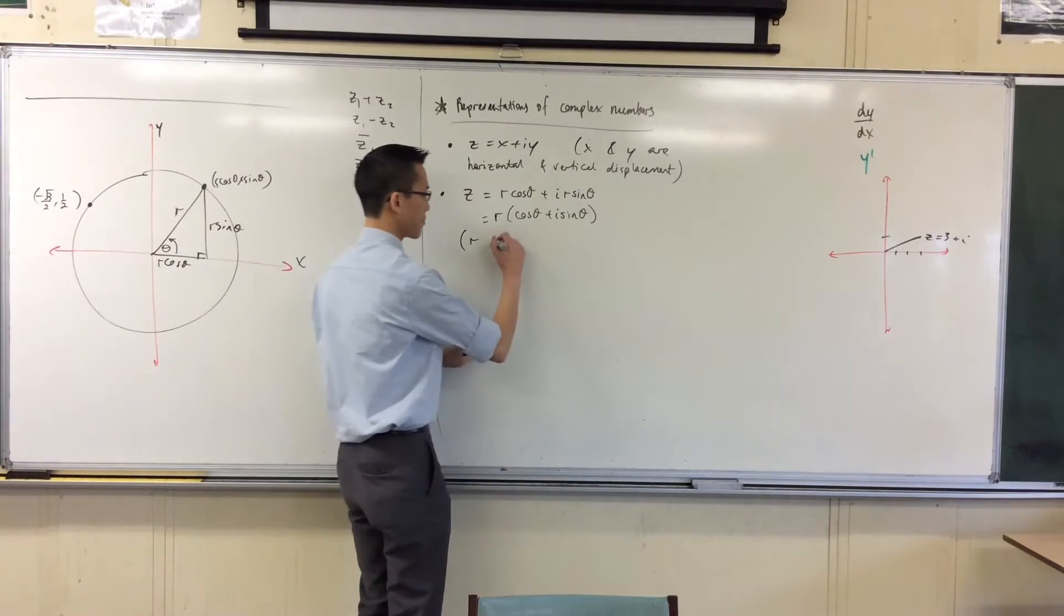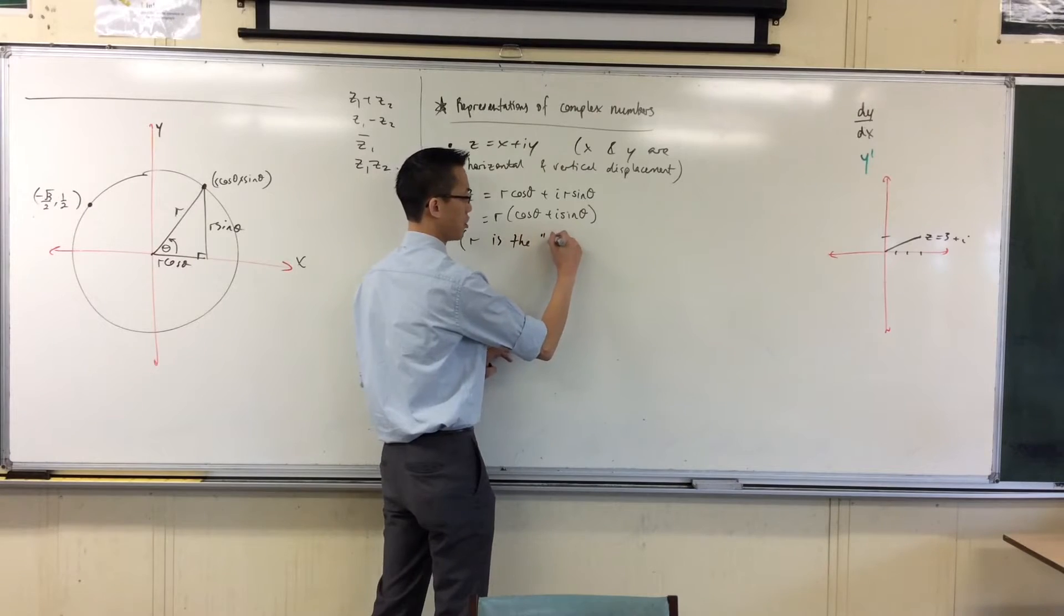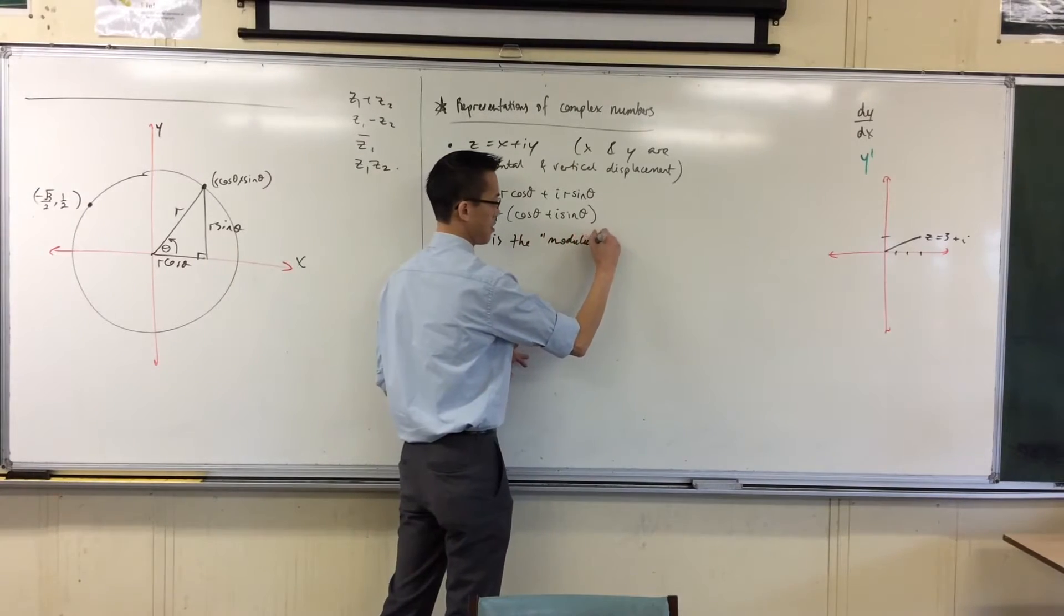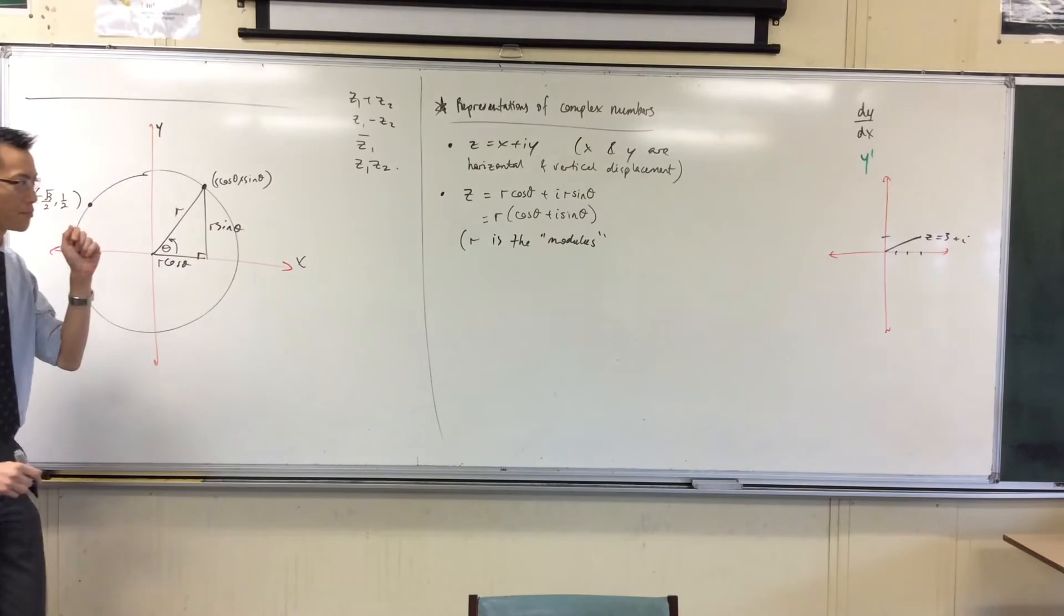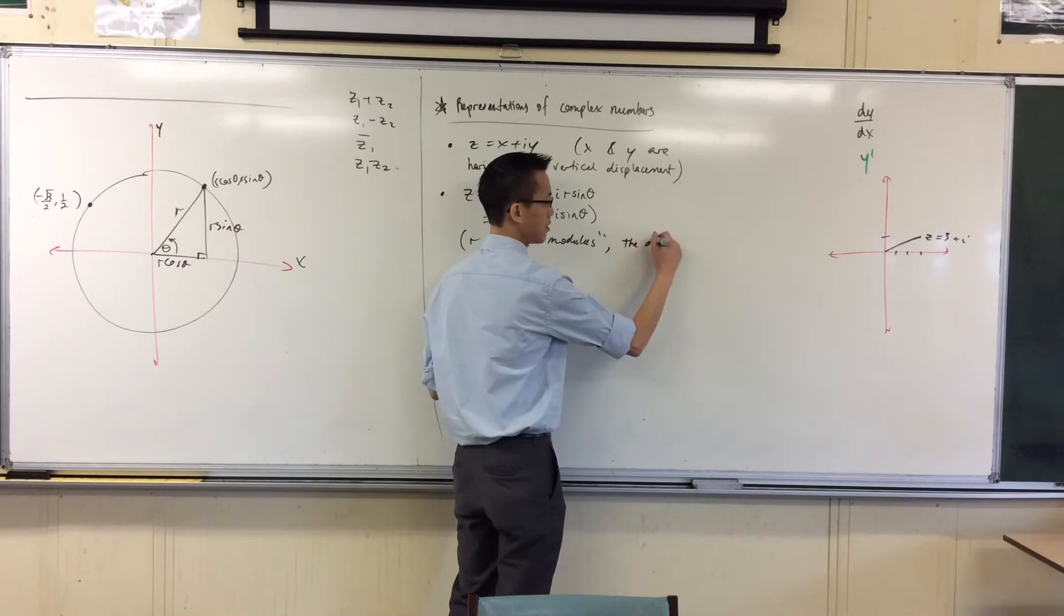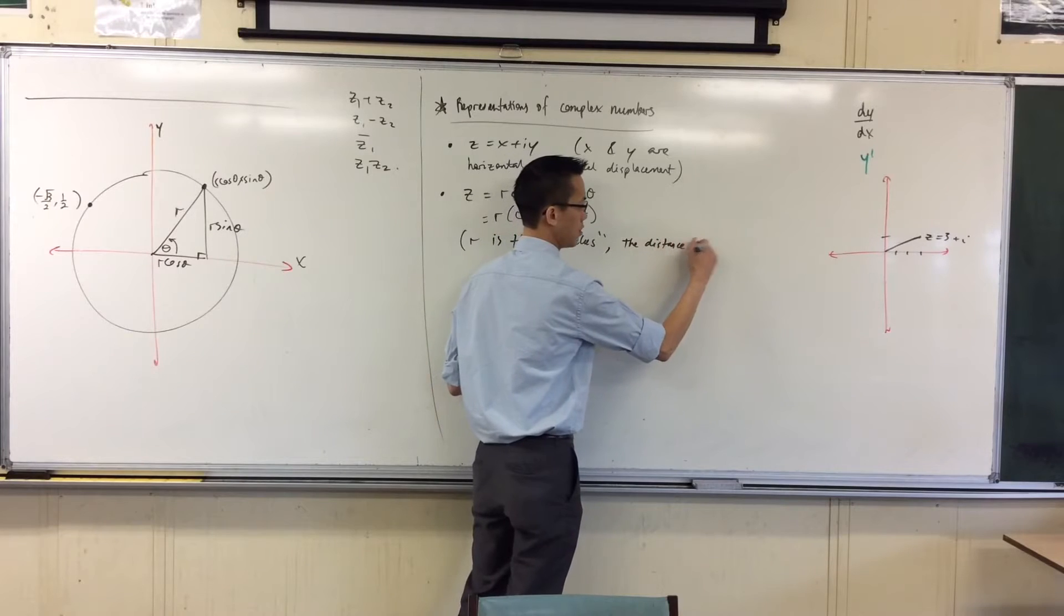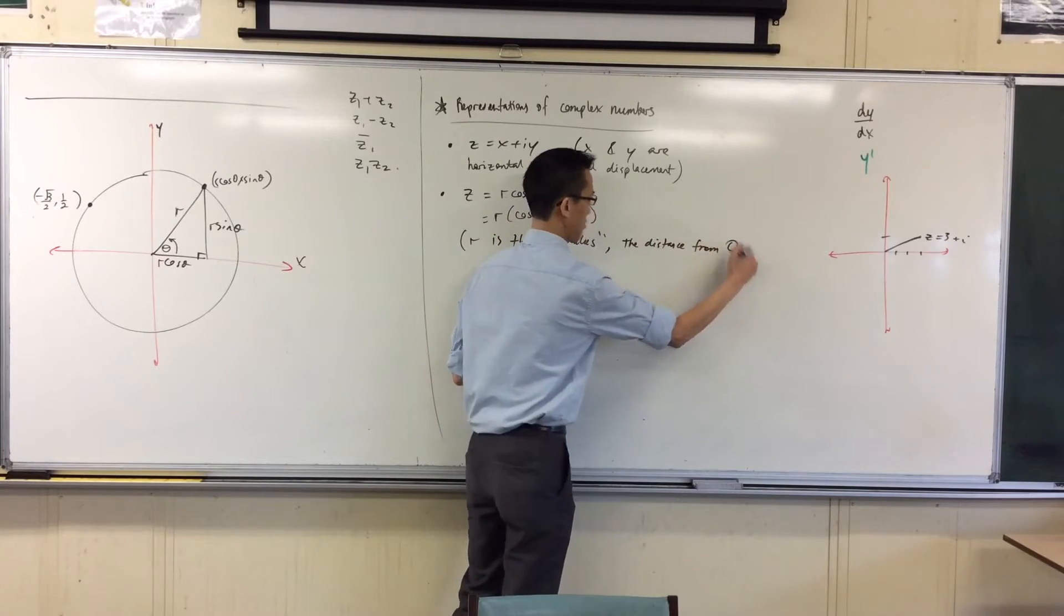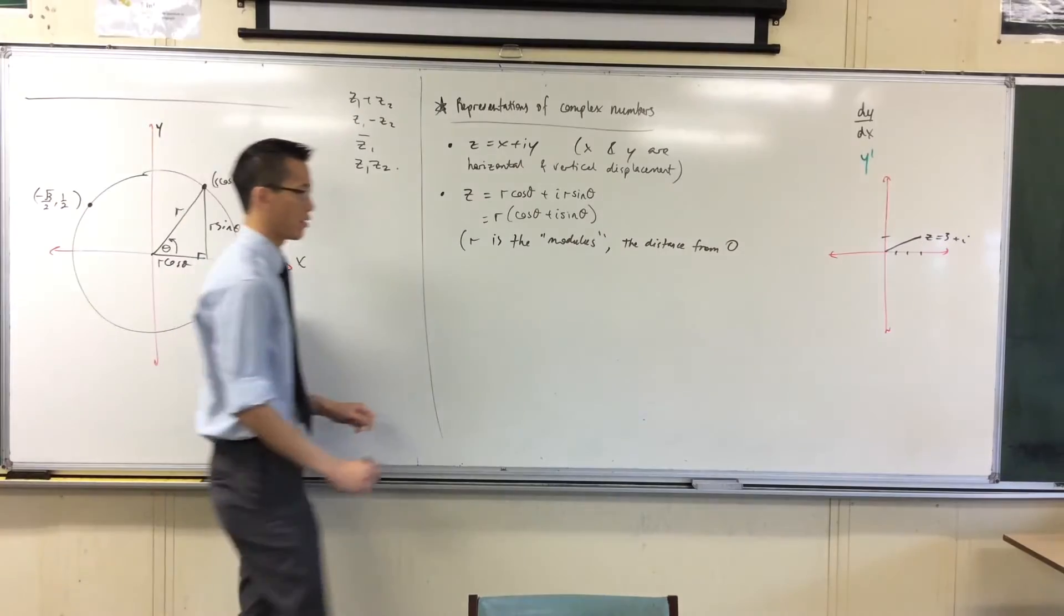So, we say r is the modulus, spelled M-O-D-U-L-U-S, which is the distance from the origin.